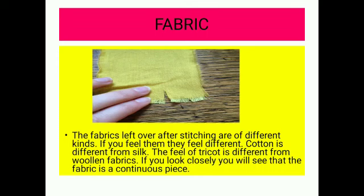The fabrics left over after stitching are of different kinds. If you feel them, they are different. Cotton is different from silk; the feel of polyester is different from woolen fabrics. If you have a closer look, you will find that the fabric is a continuous piece.